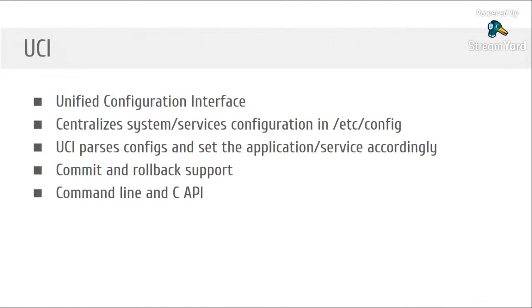Another service is called UCI — Unified Configuration Interface. What UCI does is configure the whole system in a centralized way. You don't need to configure your firewall using iptables directly, or understand Dropbear's options for SSH — you just go to /etc/config, find the file related to the service you want to configure, change the configuration there, and run uci to apply changes. I'll show examples in the next slide.